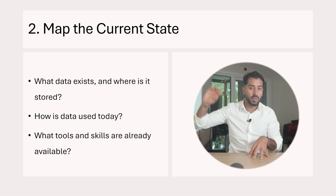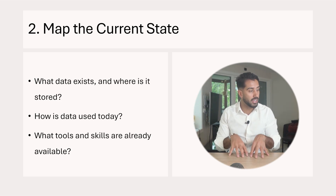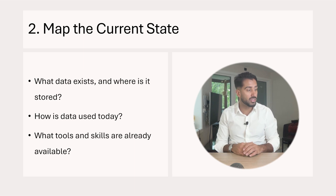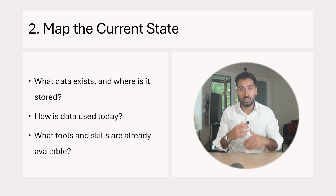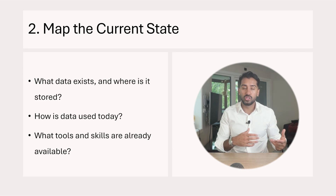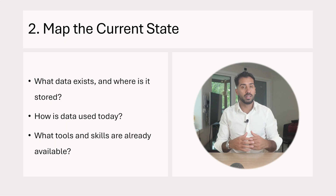Before we can say where we want to go, we have to understand where we are. Step two is to map the current state: what data do we have today, where is it stored — that's the technical current state — and how is data used today in terms of business culture and how it's being leveraged right now.